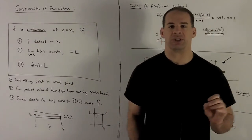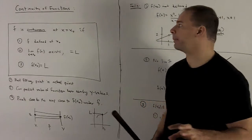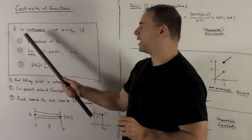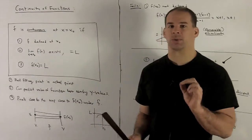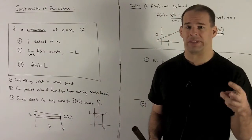So just throw up a definition and then I'll start pulling things apart. So let's say, function f is continuous at x equals x0 if three things happen.